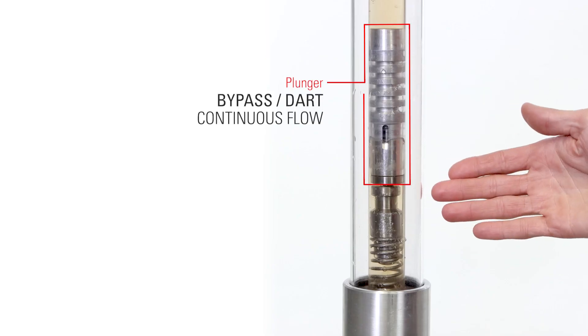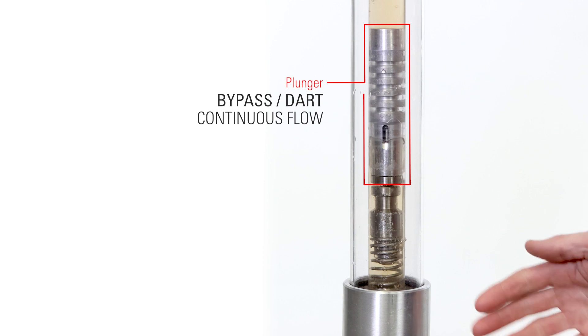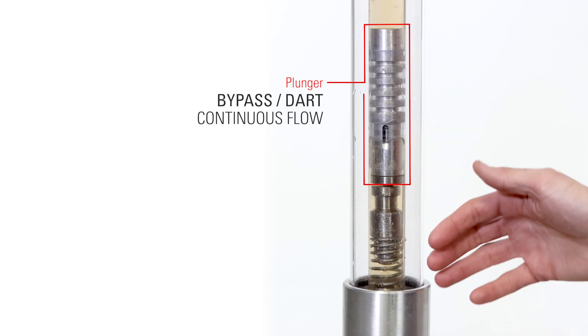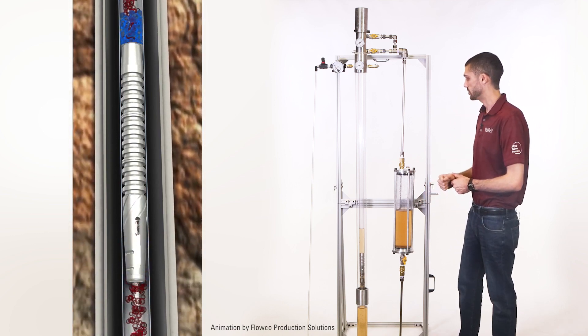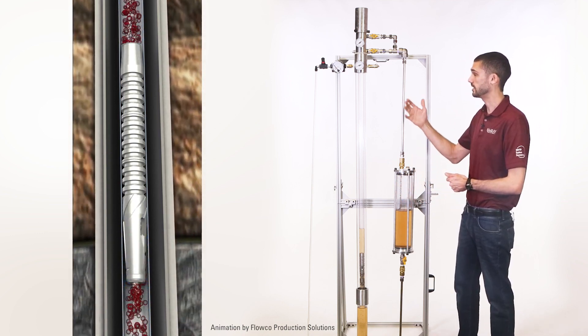So the style of plunger that we have in there right now is a dart style plunger. It's able to fall against flow. So if you have higher liquid rates, you can use this style of plunger.